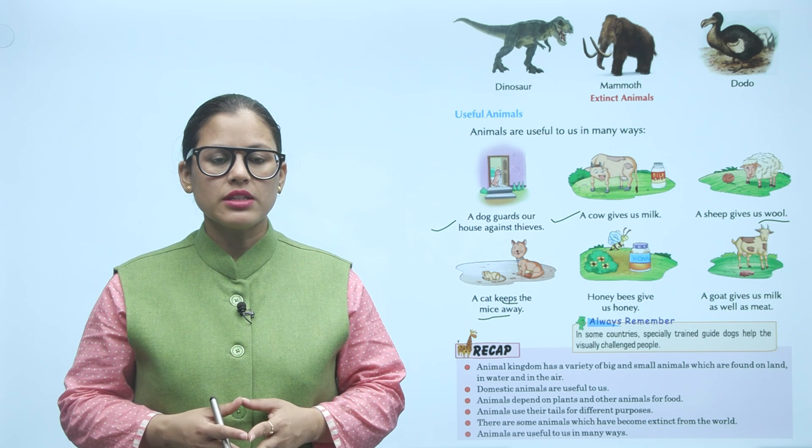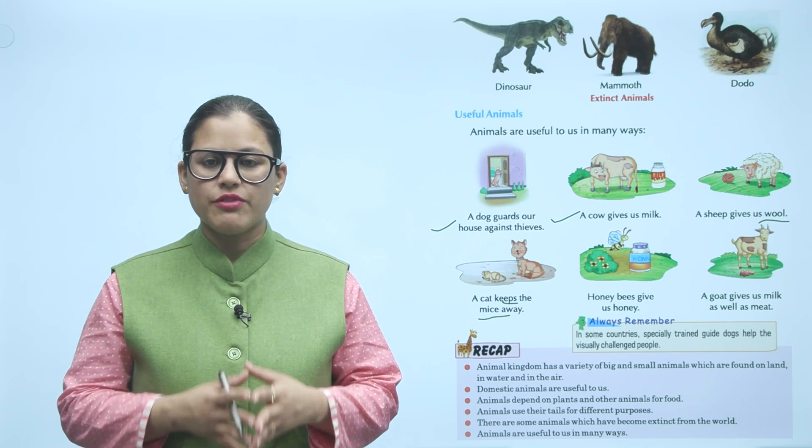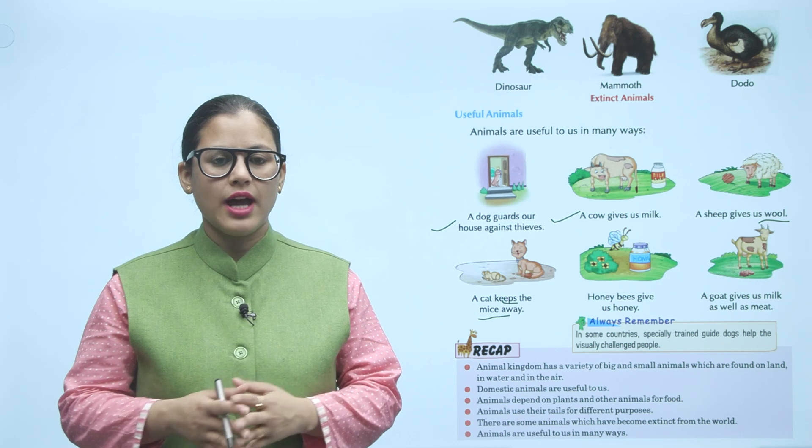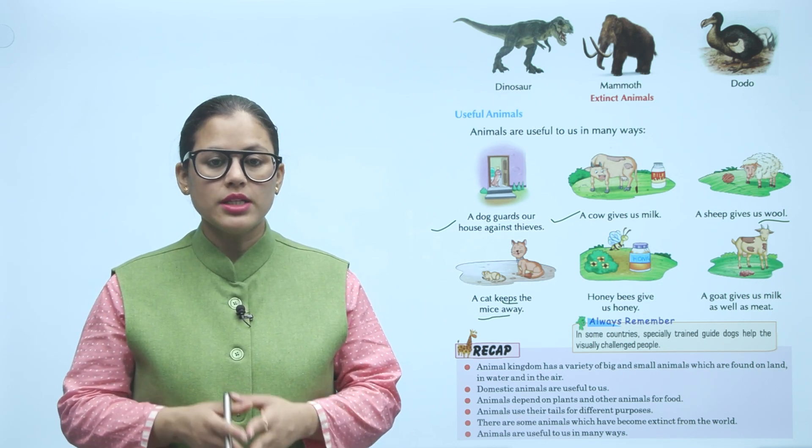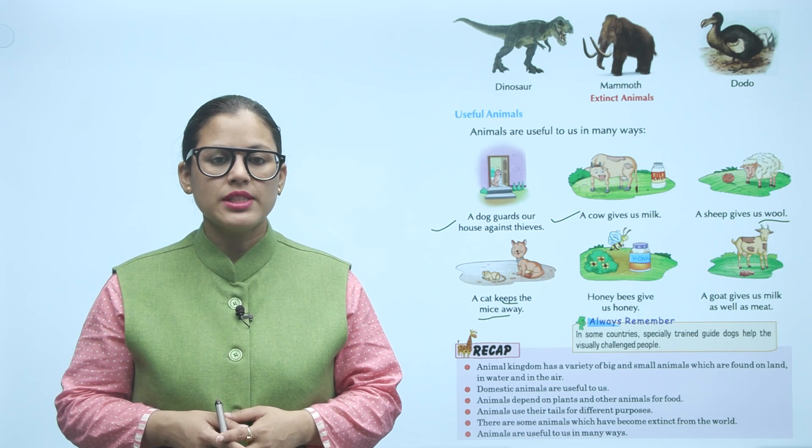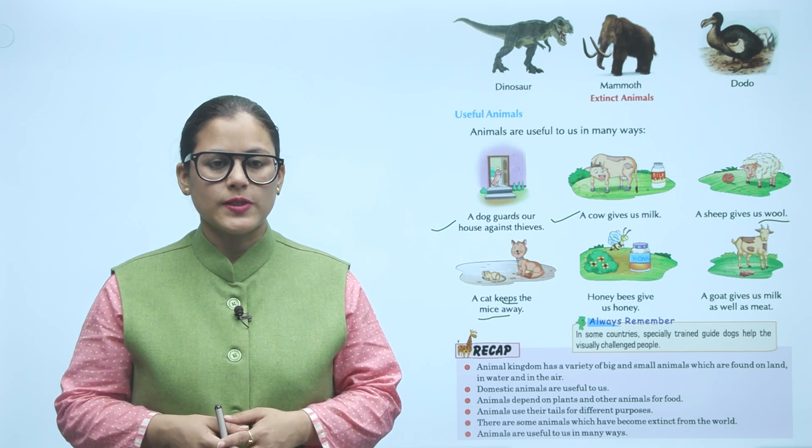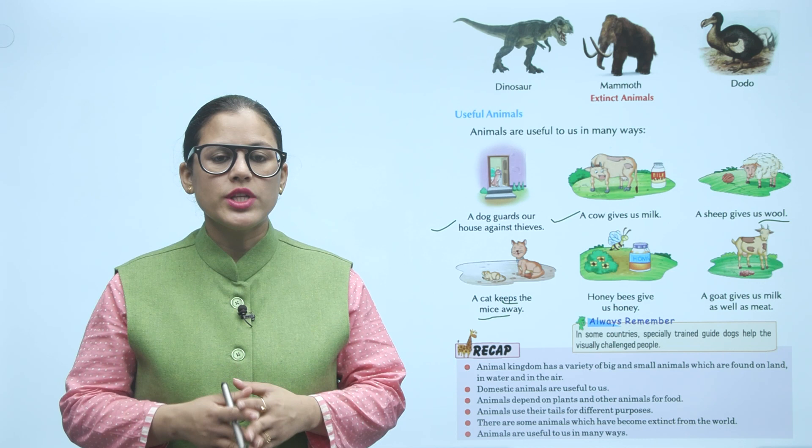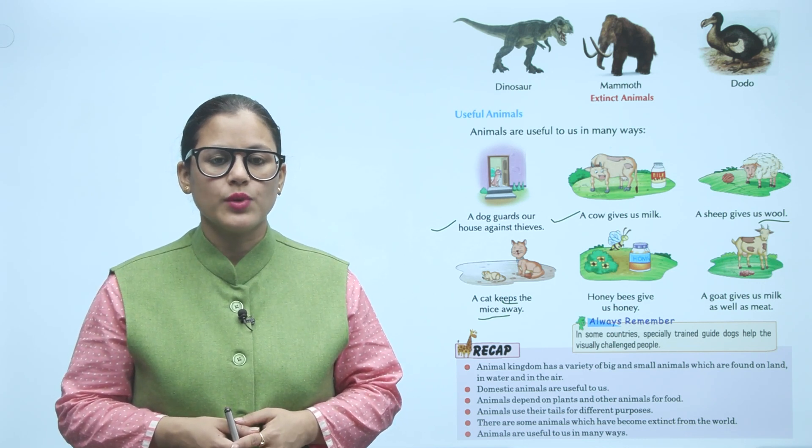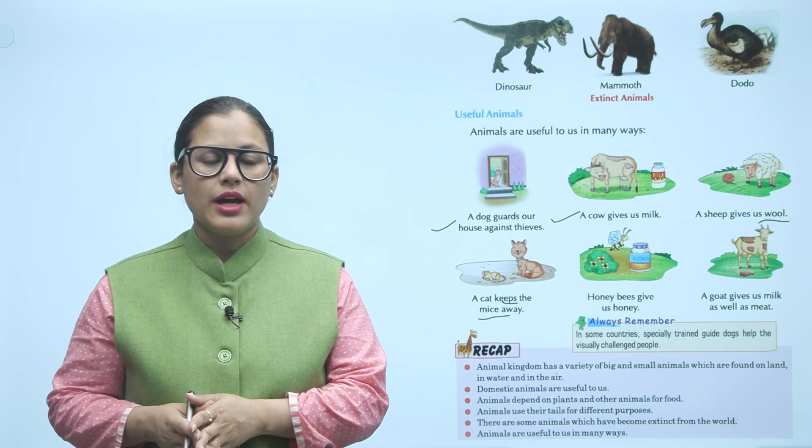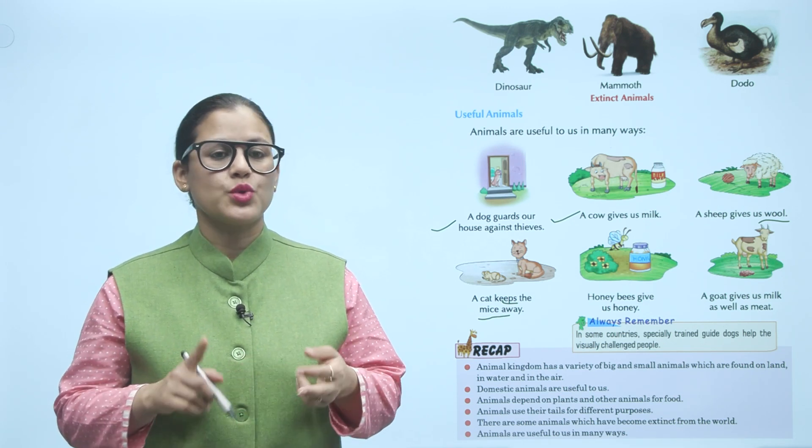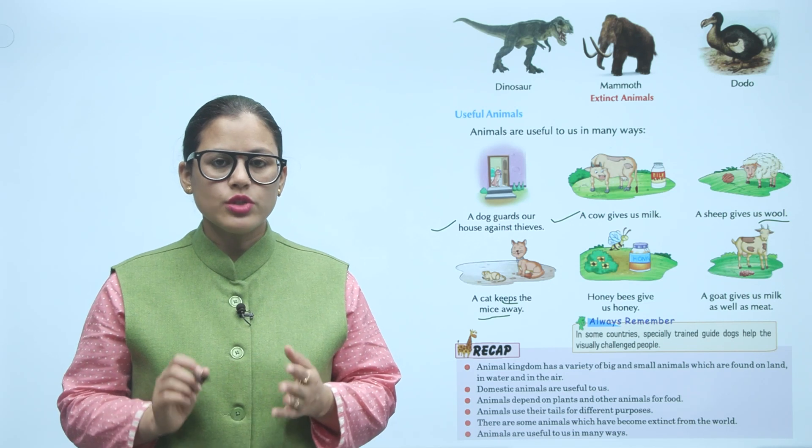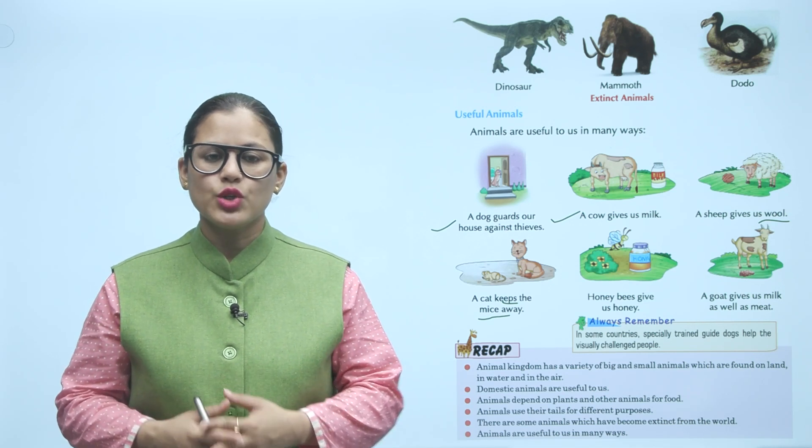Recap: Animal kingdom has a variety of big and small animals which are found on land, in water and in the air. Domestic animals are useful to us. Animals depend on plants and other animals for food. Animals use their tails for different purposes. There are some animals which have become extinct from the world. Animals are useful to us in many ways.